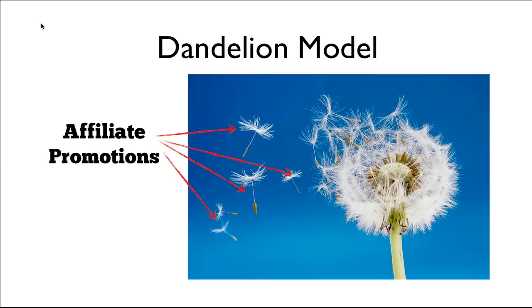I want to tell you about the dandelion model. Everybody has probably at some point picked up a dandelion or seen one in a field. If you've ever picked one up, you've probably noticed that it's really difficult to break it out of the ground without a bunch of the seeds coming off and flying far away. It doesn't take a whole lot of wind for these things to start to spread everywhere. If you think of your marketing through affiliates and joint venture partners as the little seeds on the dandelion, these seeds are so very delicately connected that the tiniest little disturbance — whether it's snapping it out of the ground or the slightest little breeze — all of a sudden they take flight and start to spread everywhere.